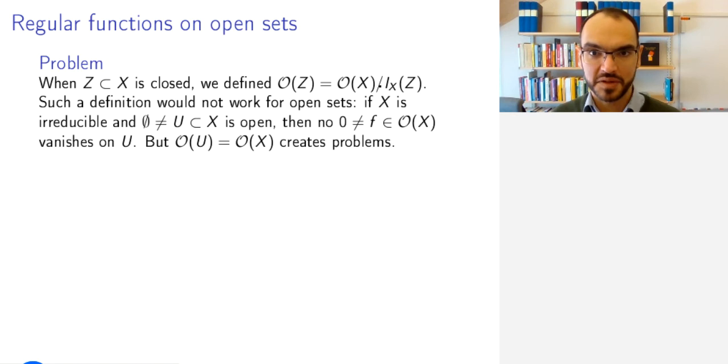And so, if we do this, then there will be no non-zero functions vanishing on our open set. And so we would get that the coordinate ring of U is the same as the coordinate ring of X. But this creates problems because we want functions that do not have zeros on U to be invertible. And we will not be able to do this. We need more functions on open sets.